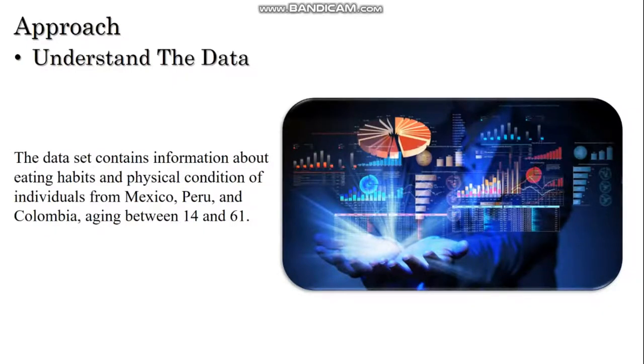Approach: Understand the data. The dataset contains information about eating habits and physical condition of individuals from Mexico, Peru and Colombia, aging between 14 and 61. The dataset has 17 features and 2111 records. Some of the 17 features in the dataset show the characteristics corresponding to physical state, some of them the characteristics corresponding to eating habits and some of the personal characteristics. You can see names of these properties and what they mean in the report document.